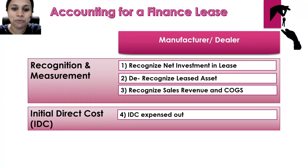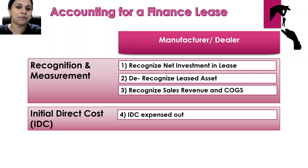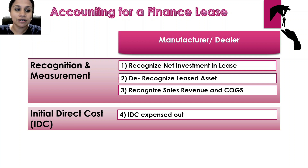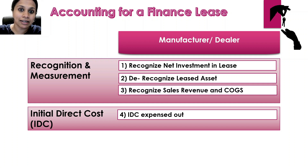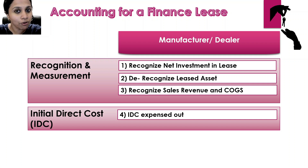I'm Ranjani — through my videos I try to simplify complex accounting topics to help you understand them better. Before we go into the examples, let us quickly recap the accounting treatment. If your lessor is a manufacturer dealer, to recognize a finance lease they will first debit net investment in leases; the credit is to the carrying value of the leased asset, and finally they recognize profit in the P&L by recognizing sales revenue and debiting cost of goods sold.